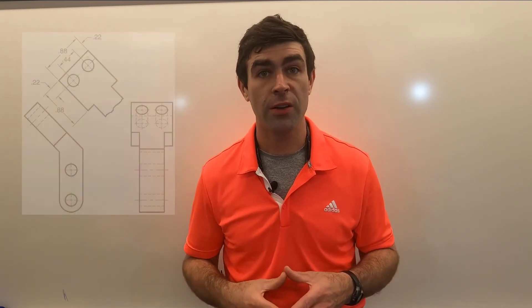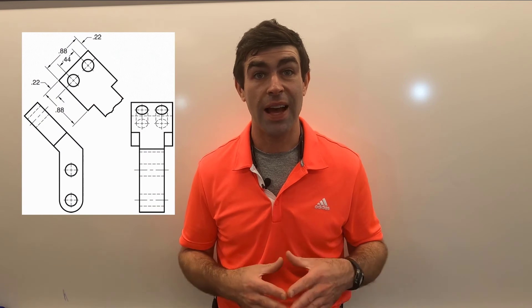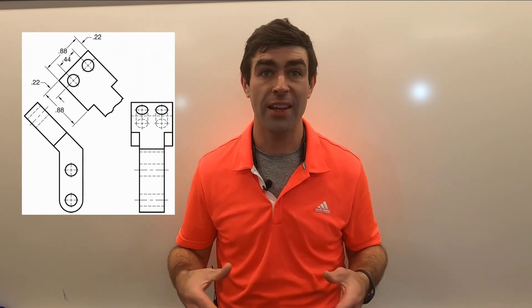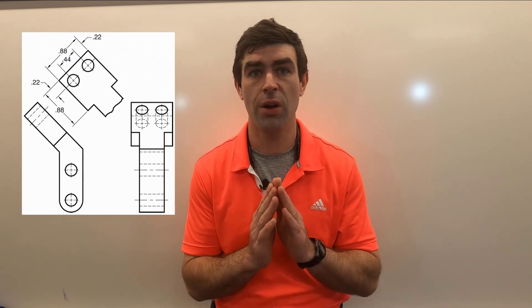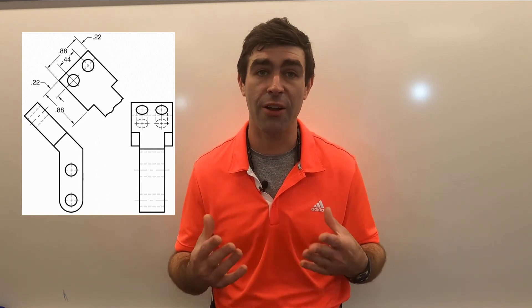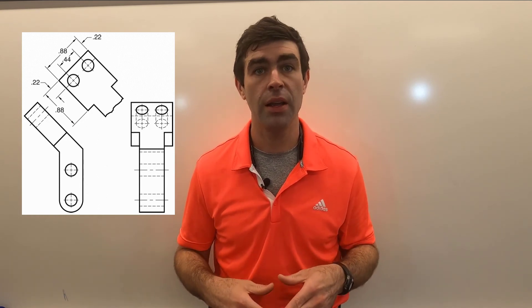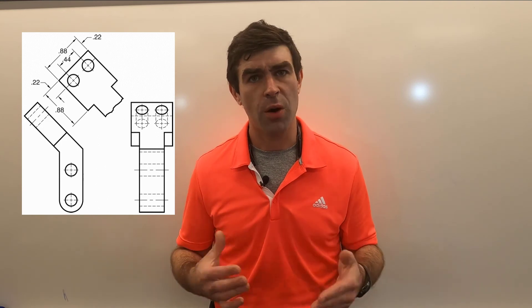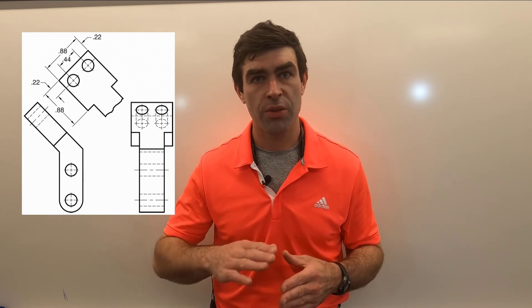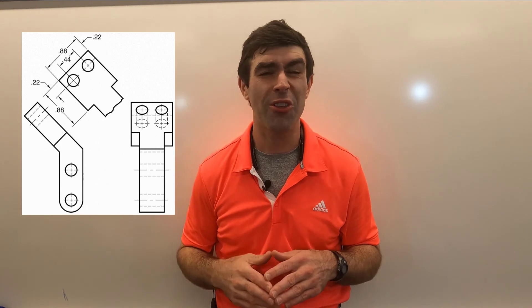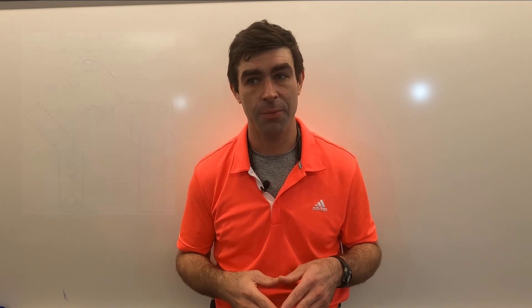A partial auxiliary view is used a lot for things like brackets, where you only want to show a little bit of that angled feature. Say you have a long bracket with a hole pattern — you'll do your auxiliary view and then cut off all the stuff you really don't need to see.